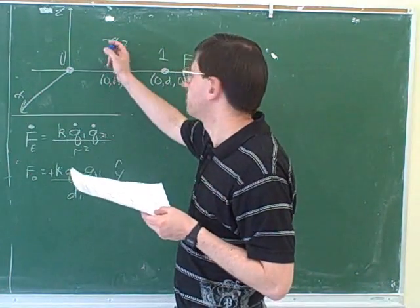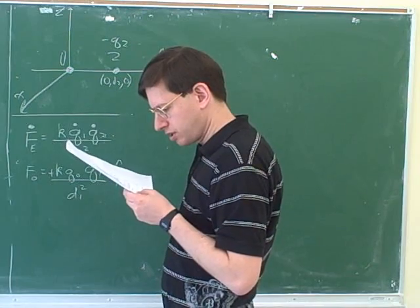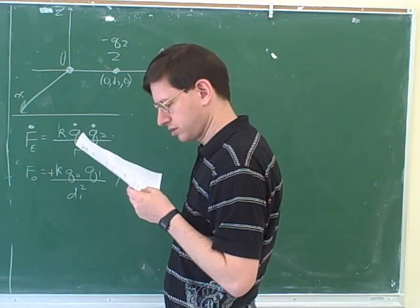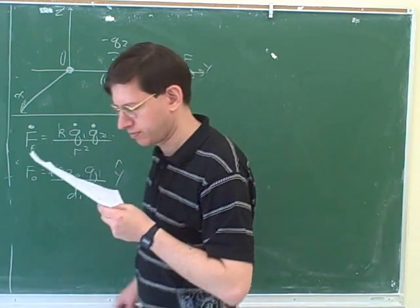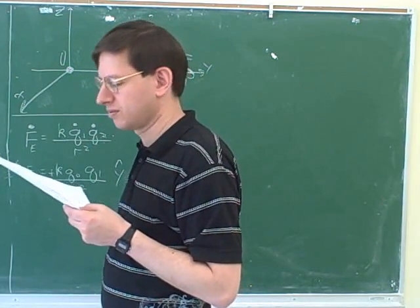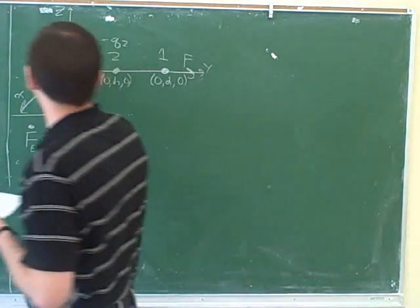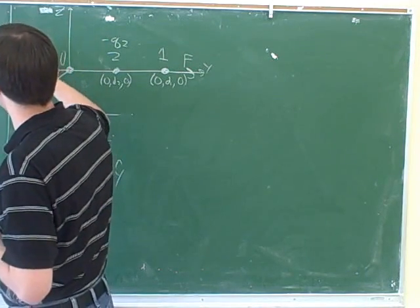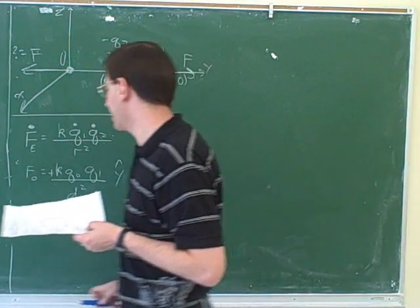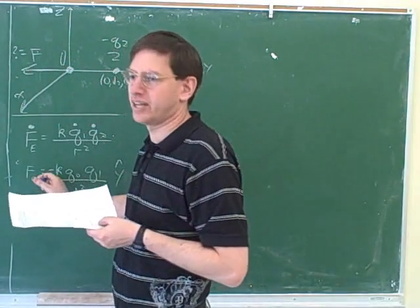Now we have a new charge which has a charge of negative q2 — that's particle 2 — and that's at a distance of d2. They want the new net force on particle 0. Looking back at part A, it says the force on particle 0 due to particle 1, so that would be negative. We blew it on the first one because we were figuring out the wrong force — we answered the wrong question. They were asking for this force. The force on charge 0 is in the negative direction.